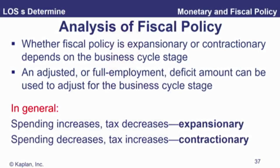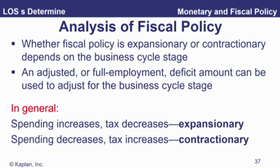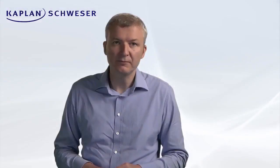Basic analysis — this just summarizes what we've looked at. What we should be doing obviously depends on the cycle. An adjusted or full employment deficit amount can be used to adjust for the business cycle stage — that's talking about automatic stabilizers. Look at what our deficit is and where we would expect it to be because we're in a recession or a boom anyway, and then you can judge how much of that is actually due to discretionary policy. G up and tax down is expansionary; government spending down, tax up is contractionary.